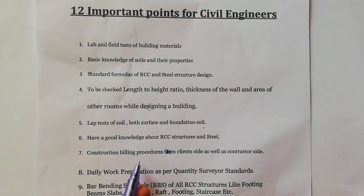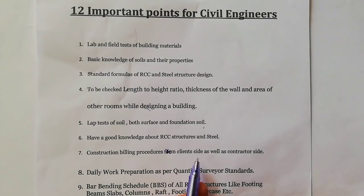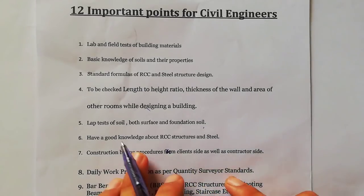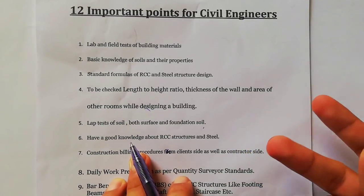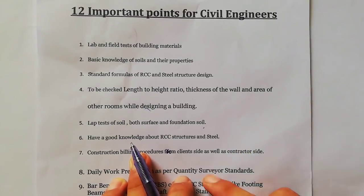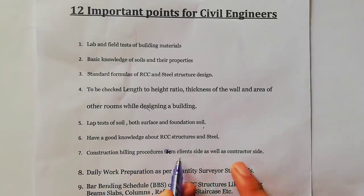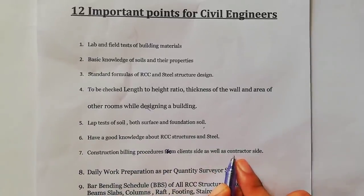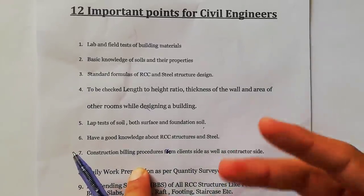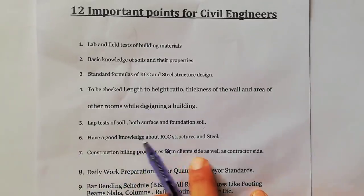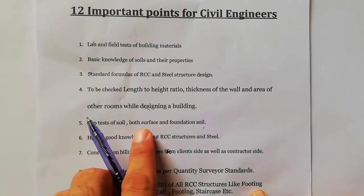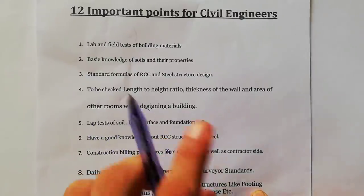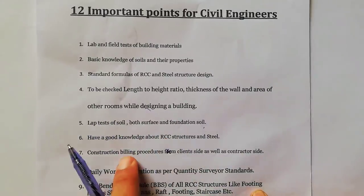The seventh point is construction billing procedures from the client side as well as the contractor side. This involves communication during construction work — the communication between clients and contractors. If you are working on site as a civil engineer or site engineer, you need to maintain good communication with both clients and contractors regarding all billings.